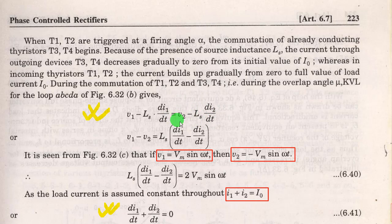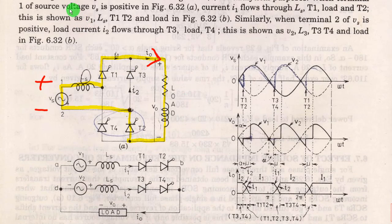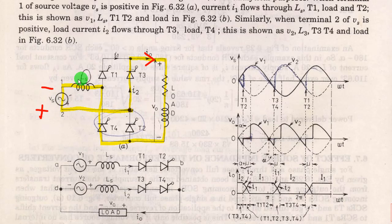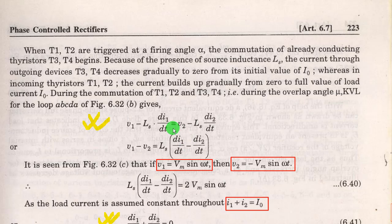Now in the negative half cycle the polarity has been reversed and the current flows in the opposite direction, completing the loop through the negative of the supply. We get: input voltage minus the voltage drop at the inductor equals the output voltage. That is: V2 − Ls·(dI2/dt) = output voltage = V1 − Ls·(dI1/dt). From this equation we can write: V1 − V2 = Ls·(dI1/dt) − Ls·(dI2/dt). Now V1 = Vm sin(ωt) and V2 = −Vm sin(ωt), so substituting: Ls·(dI1/dt − dI2/dt) = 2Vm sin(ωt).